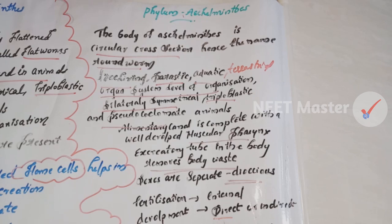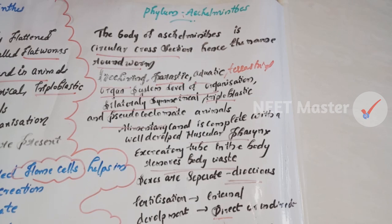Aschelminthes are bilaterally symmetrical, triploblastic, and pseudocoelomate animals. They have a well-developed muscular pharynx and an excretory tube that removes body waste from the body cavity. They are dioecious — males and females are distinct.